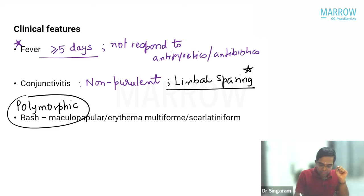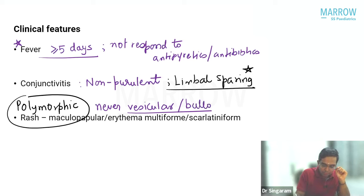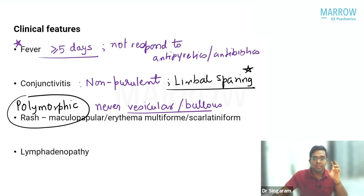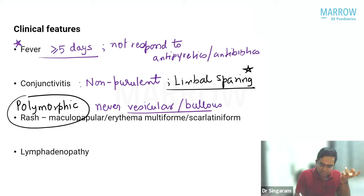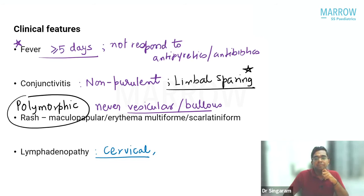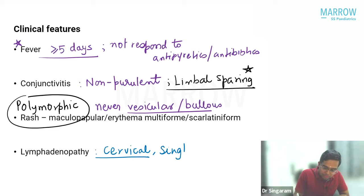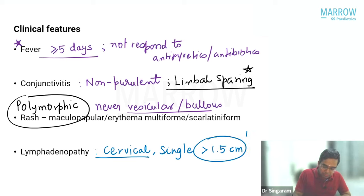Lymphadenopathy in Kawasaki disease is usually cervical. Importantly, it is typically a single cervical lymph node, and the size must be more than 1.5 centimeters. Remember: single cervical lymphadenopathy greater than 1.5 cm in size.